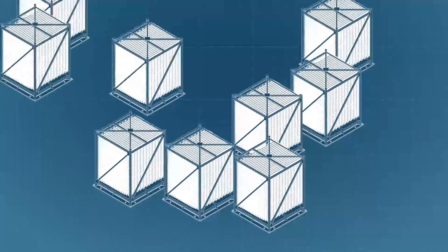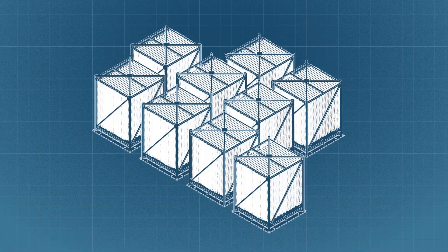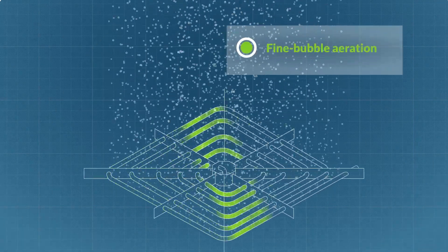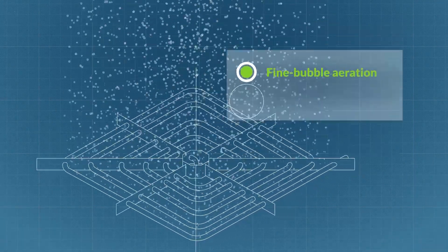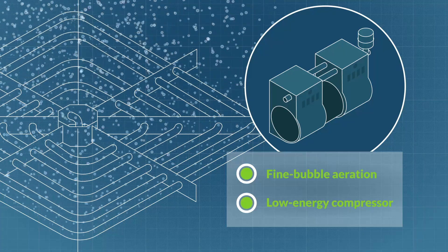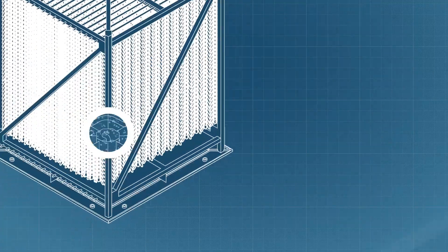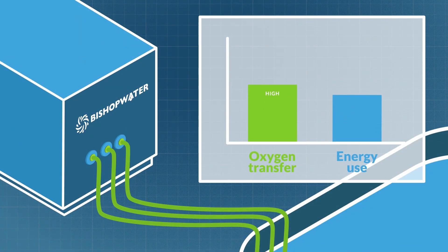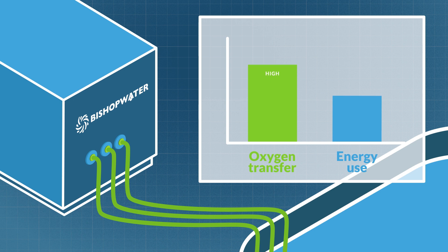Biocord's aeration system is also much more energy efficient than others. Each reactor is equipped with an integrated fine bubble aeration system that is powered by a low energy compressor rather than a complex, costly and energy intensive blower. This design is proven to achieve the same or greater oxygen transfer as alternatives, but with up to 50% lower energy consumption.